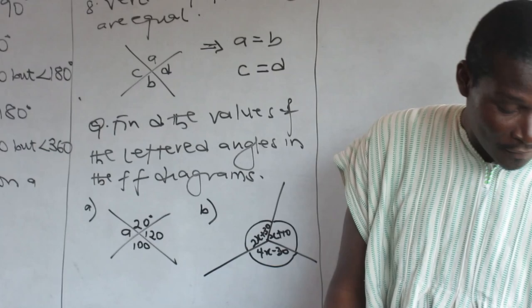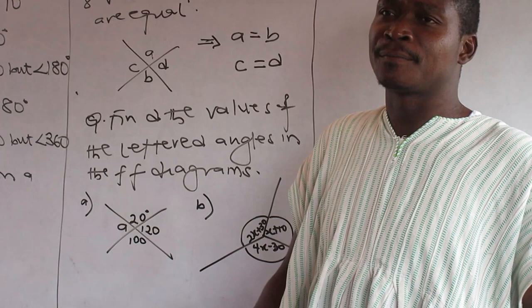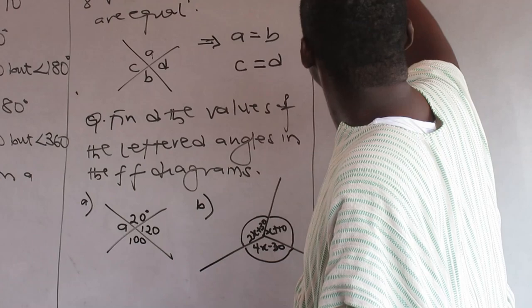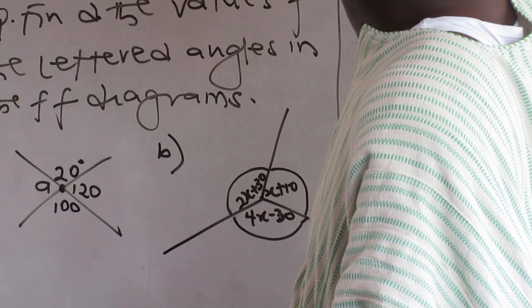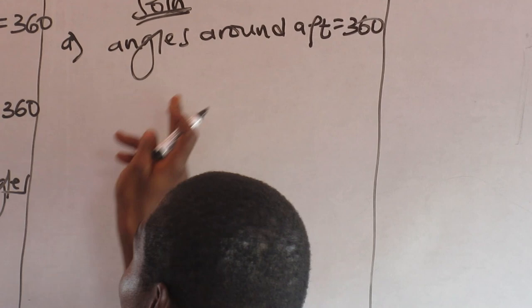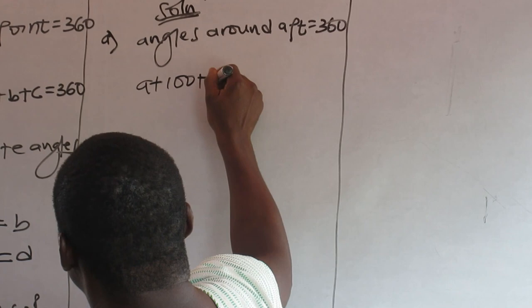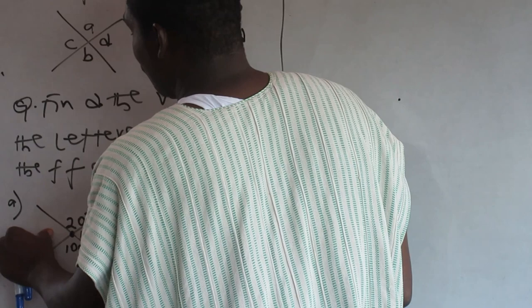Application: find the values of the lettered angles in the following diagrams. I can see there are angles around a point. I need a reason so when you're doing repetition it's easy to understand - sometimes students may wonder why we're doing that, but the reason should guide you. There's a gap here unless all those gaps are closed.